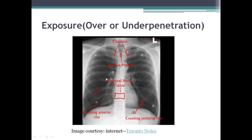Next is exposure — the film can be over-penetrated or under-penetrated. To assess exposure, look at the lower part of the cardiac shadow where the vertebral bodies should be just visible through it. If the vertebral bodies are very clearly visible, the film is over-penetrated — it will appear more black and low-density lesions might be missed. If you cannot see the vertebral body at all, the film is under-penetrated and the lung will appear more white, which is also a problem. Proper exposure is essential to identify lesions correctly.